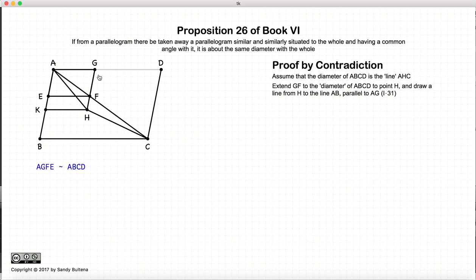So what we're going to do is extend the line GF until it hits the diameter of AC through the point H. And then from H we're going to draw a line parallel to AG to the point K. So now we have a new parallelogram AKHG.